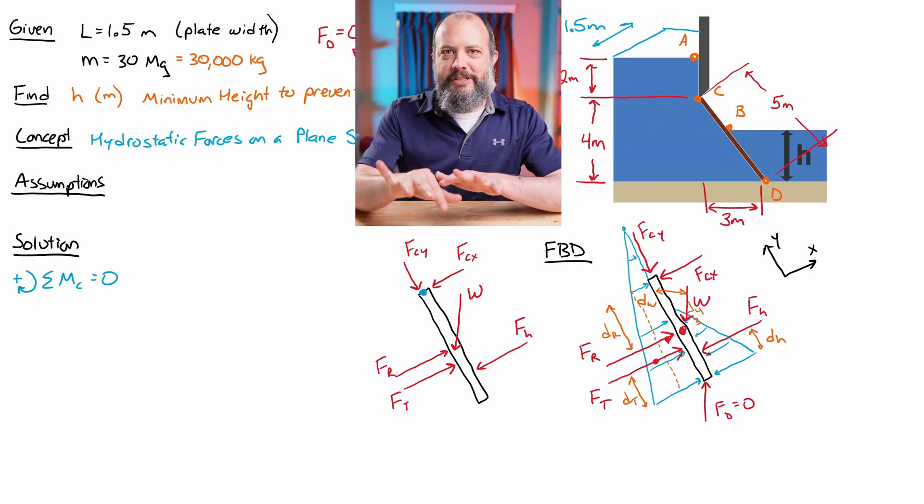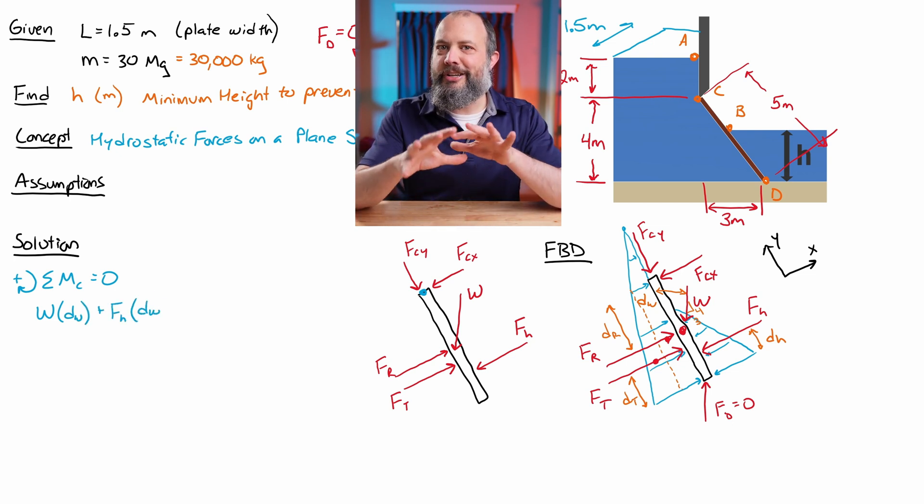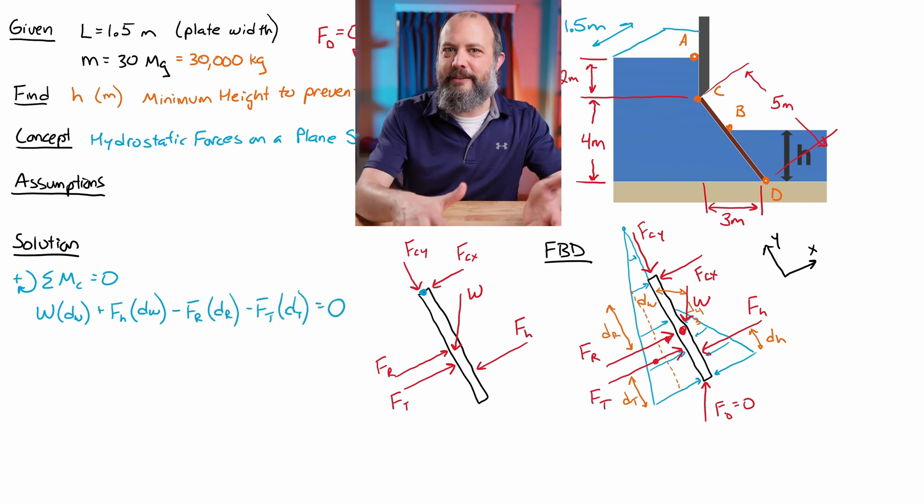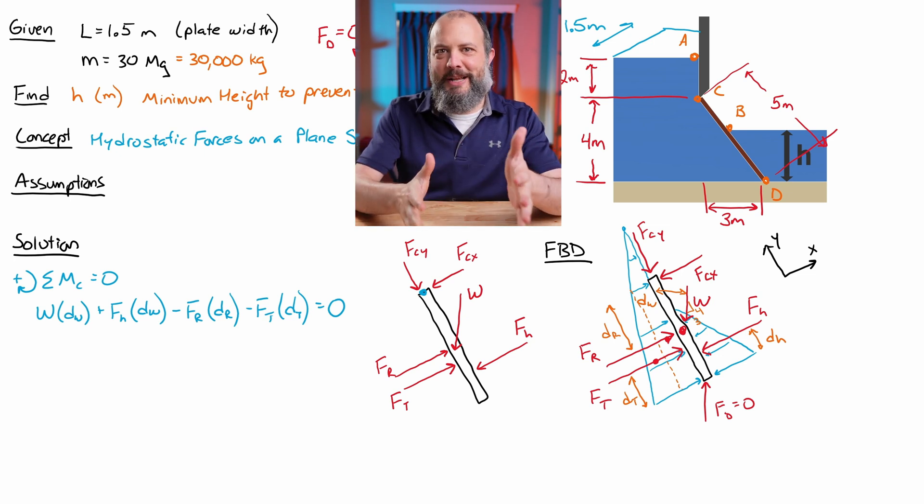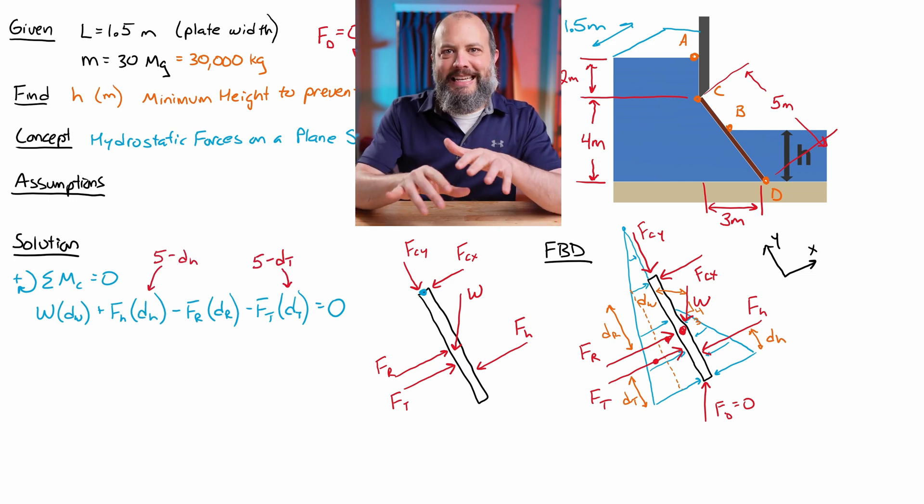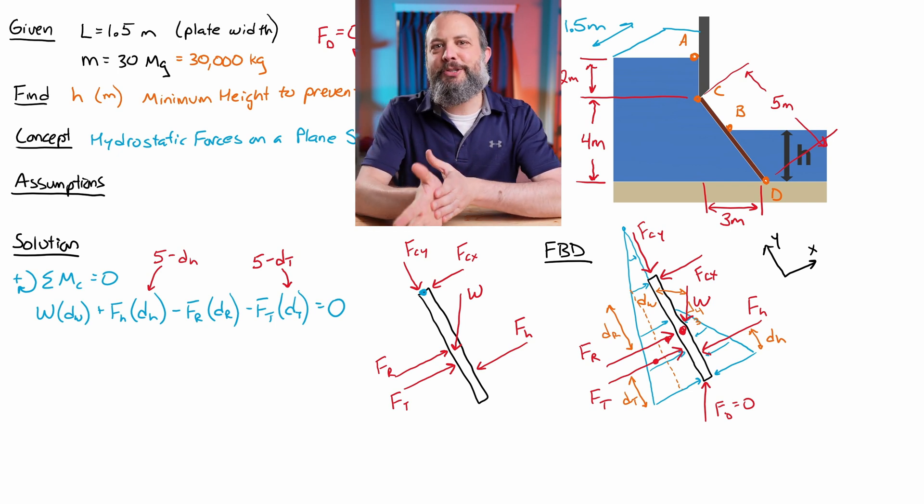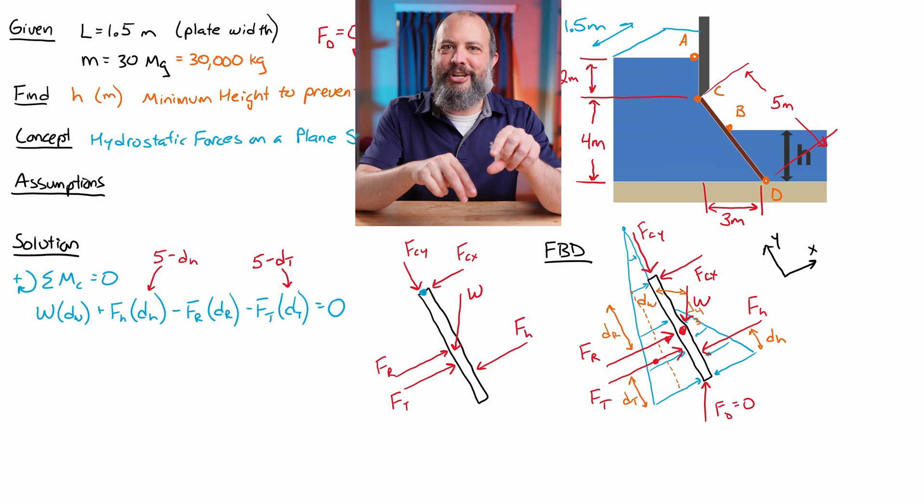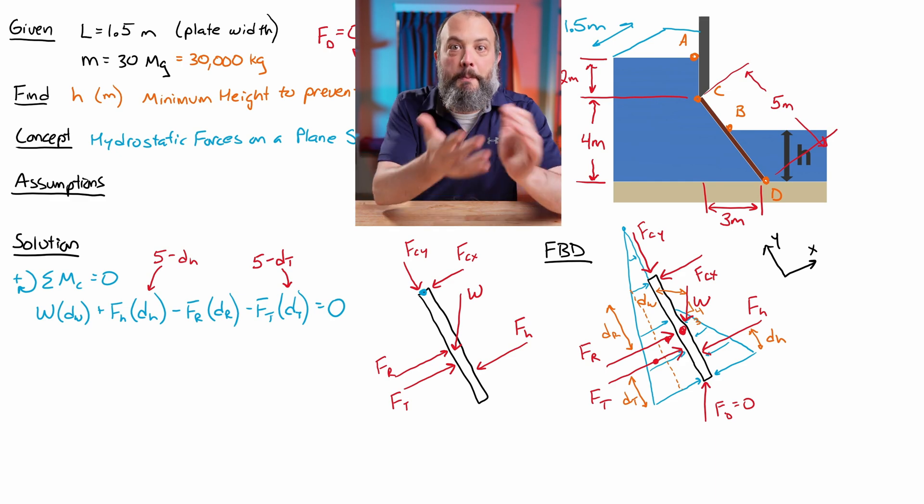And we've got four forces. The weight vector and FH are both causing clockwise rotations. Those are positive terms. And the rectangular and triangular distributed loads on the left-hand side are both trying to create a counterclockwise rotation. So those are both negative terms. And I knew when I wrote that free body diagram, choosing distances from point D instead of C was going to mess me up. And of course, the first time I write my moment equation, I messed it up and used the wrong distance. For the moment about point C, it needs to be force times five minus the distance. Because I'm not measuring these force vectors from point D, which is the ground. I'm measuring them from the pivot point at C. So that's why these quantities for DH and DT should be five minus D in order to get the distance from point C, which is where the moment is being calculated.